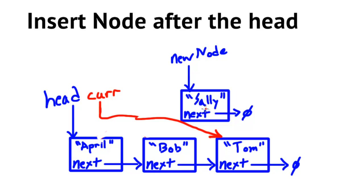We know we should set new node's next to whatever current is pointing to. But we don't have a mechanism to set Bob's next to point to this new node — we don't have a pointer available to update that next field to point to the new node. So that's a problem, and we're going to have to introduce another pointer.